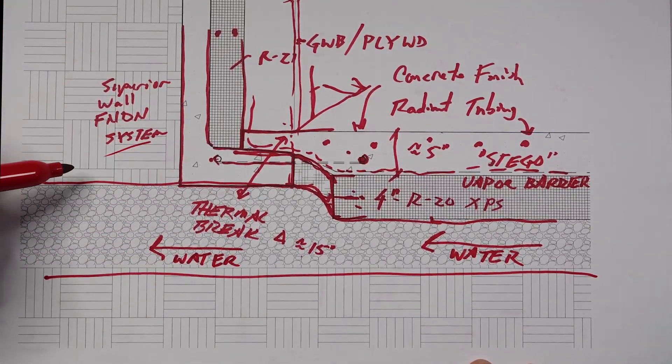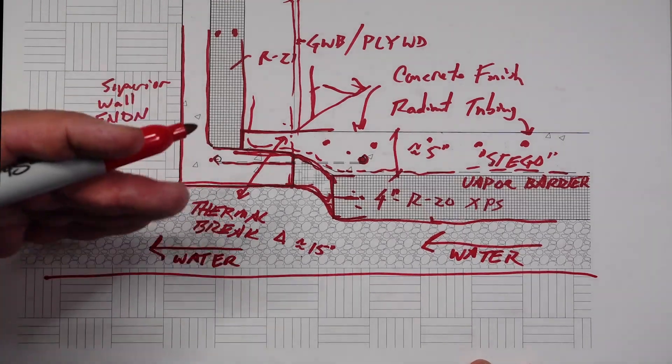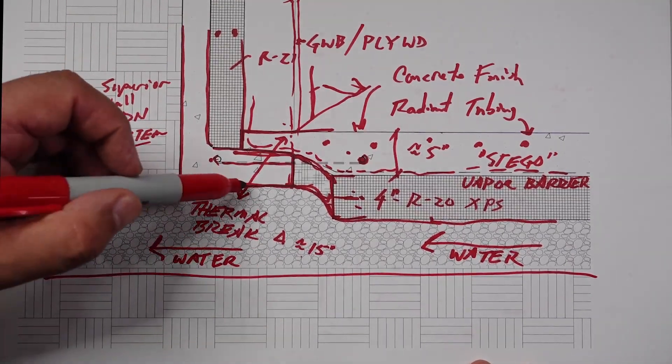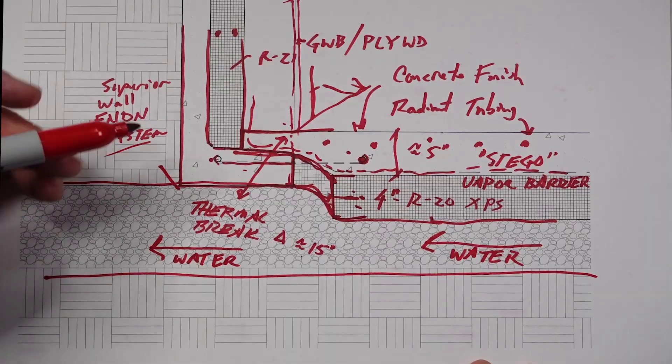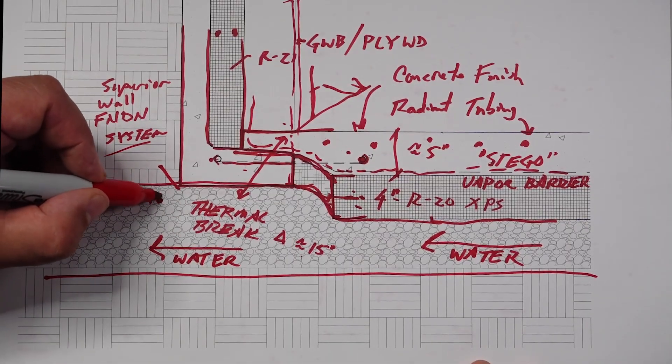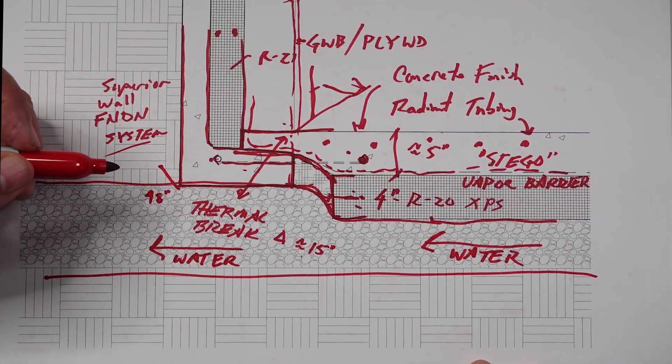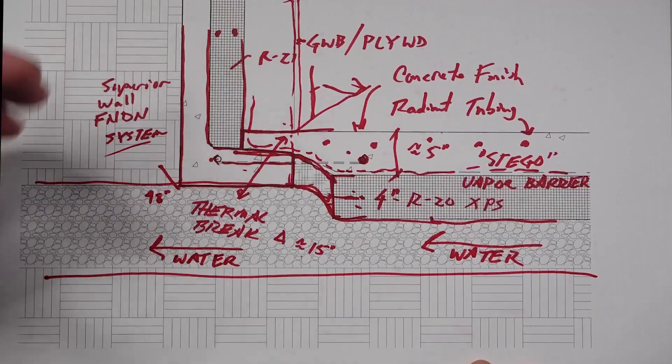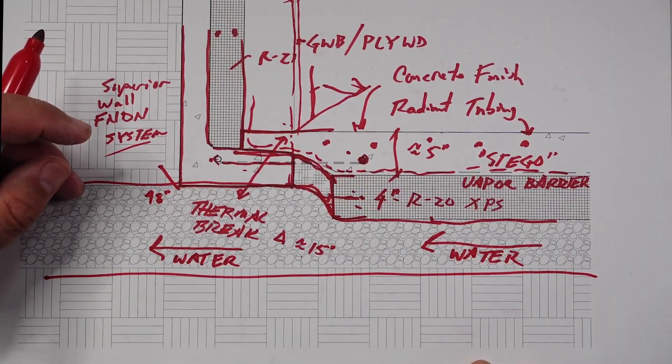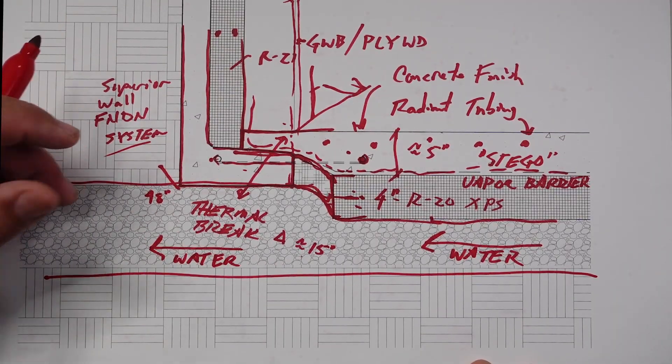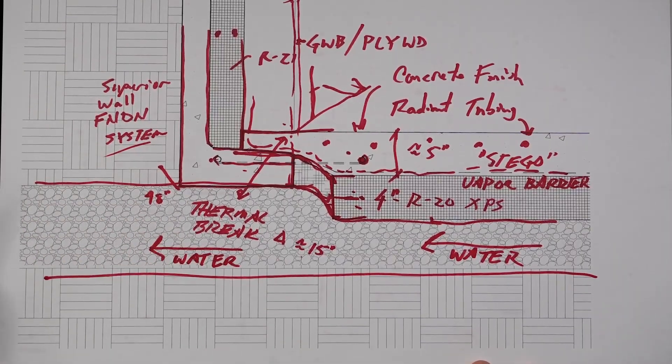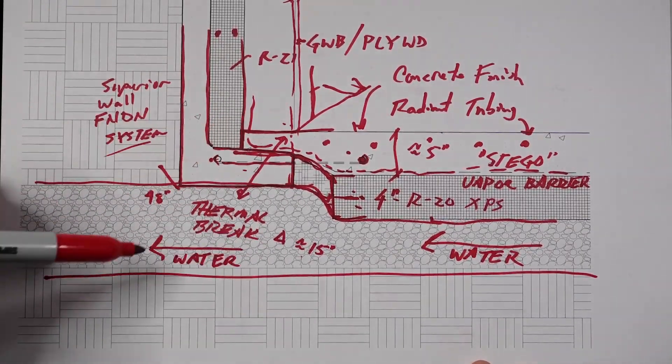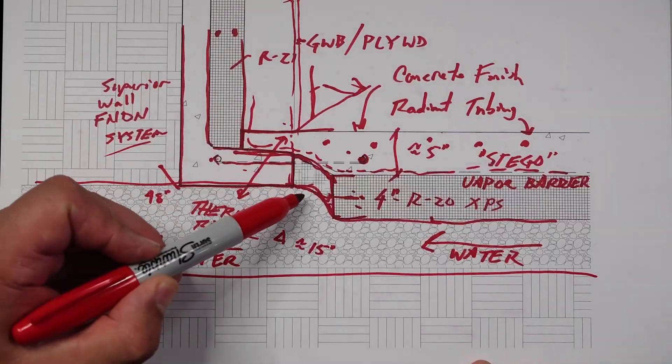The Superior Wall foundation system made a really good choice because we don't have footings in this house. The actual wall, which can span up to a 48-inch opening, even though we don't, it's sitting on a nice level stone pad the whole way. But we don't need a footing there. It can just literally sit on that stone.